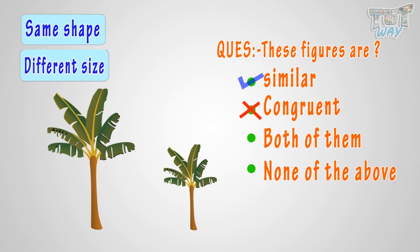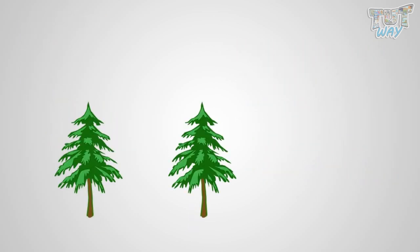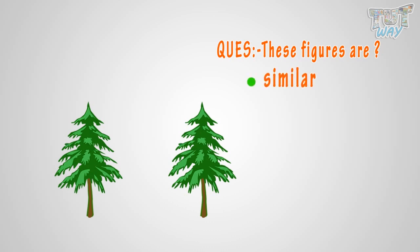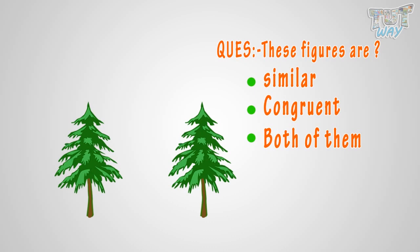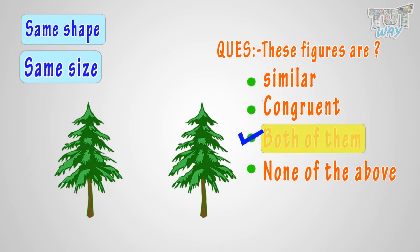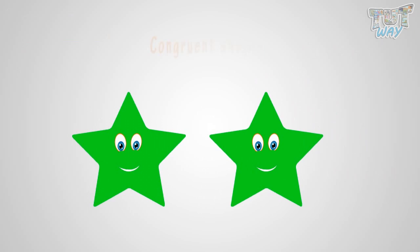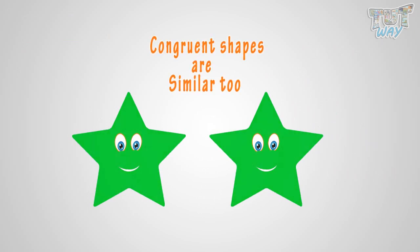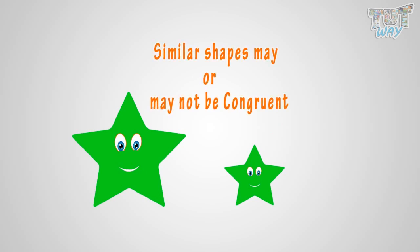Here are two more figures. Are these figures similar, congruent, both, or none of the above? Both figures have the same shape, so they are similar. But also they have the same size, so they are congruent too. The answer is both — they are similar as well as congruent. So kids, all congruent shapes are similar too, but similar shapes may or may not be congruent.